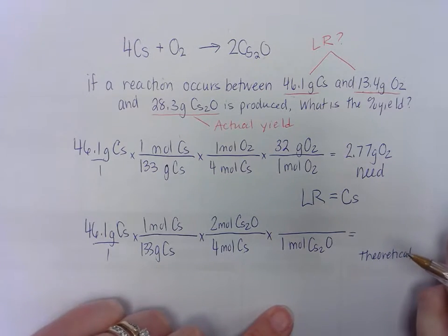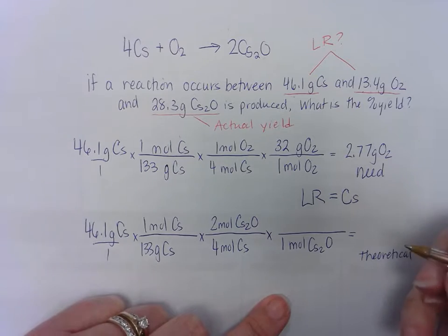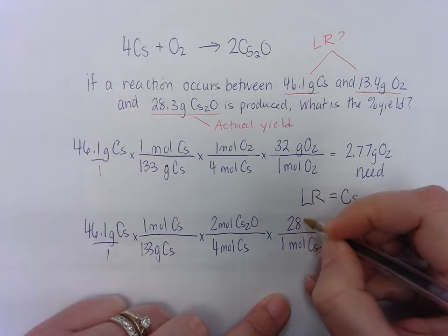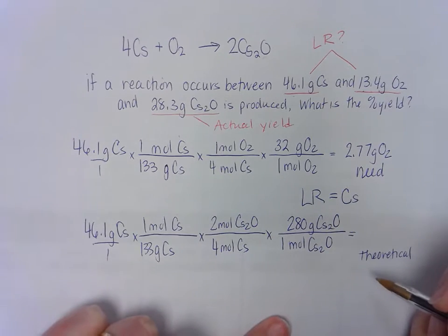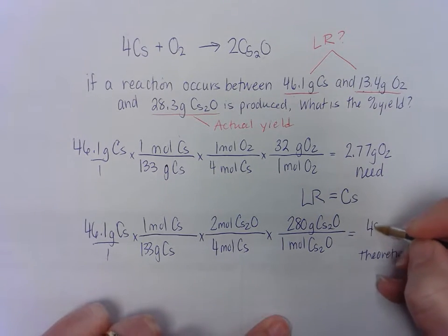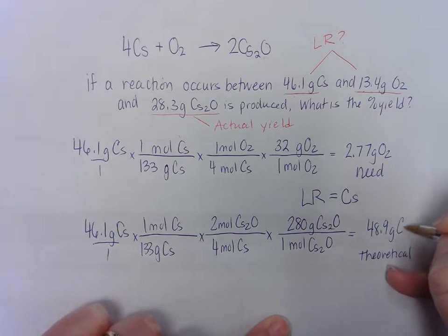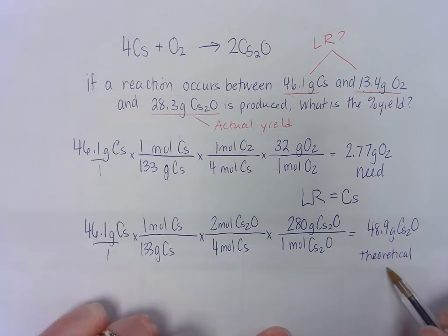And now I'll change that back to grams. And if you look at the masses on the periodic table, you get a molar mass of 280 grams of CS2O. When you do all that math, you get an answer of 48.9 grams of CS2O. And that's your theoretical yield.